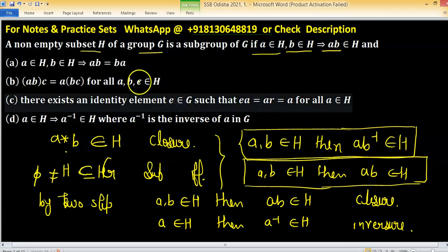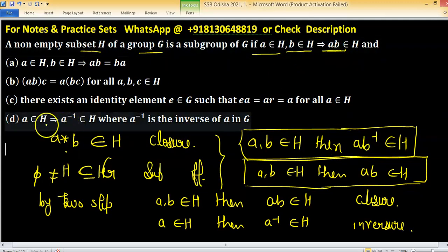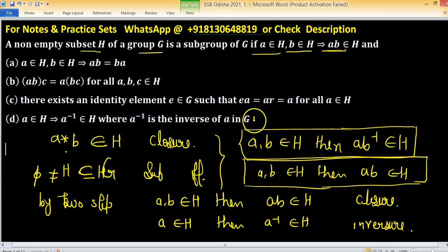Now according to this problem, closure property is given to you and another property given in option D which helps you to prove inverse. So the right one is D.